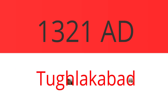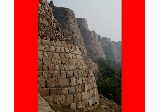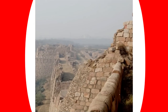Much of Tughlaqabad was built over a period of only two years during Ghiyasuddin Tughlaq's short reign from 1320 to 1324. And yet its outer walls are 6.5 km in length, inside which are two walled areas.